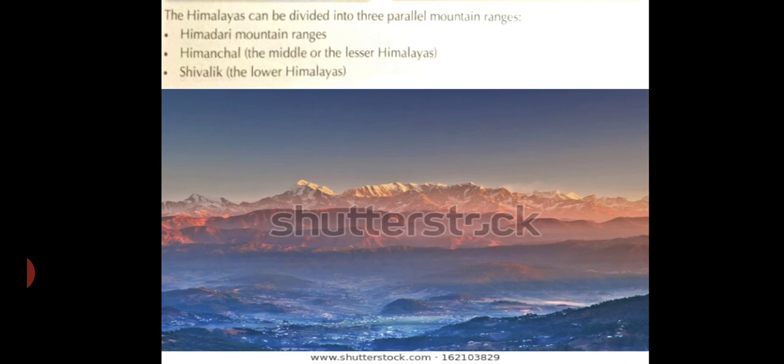The Himalayas can be divided into three parallel mountain ranges: Himadri, Himanchal — the middle or lesser Himalayas — and the Shivalik, the lower Himalayas. The whole Himalayan range is distributed within three parts: number one is Himadri, number two is Himanchal, and number three is Shivalik.